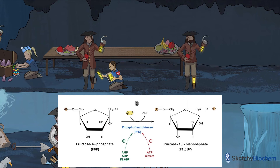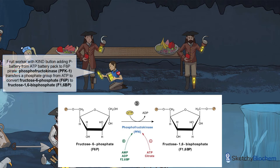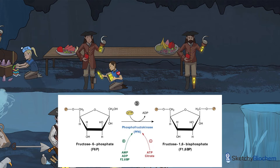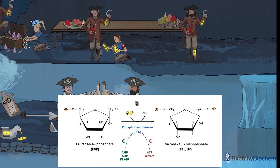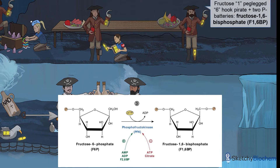In step 3, phosphofructokinase 1, or PFK1, transfers a phosphate group from ATP onto F6P to make fructose-1,6-bisphosphate, aka F1,6-BP. PFK1 is represented by another kind button-wearing cast member adding a phosphate battery to the one peg leg of the six-hook-handed pirate. The peg legs represent carbon number 1. He's surrounded by fruit to remind you of phosphofructokinase 1. This step is also irreversible, as shown by the waterfall. The six-hook pirate now has two phosphate batteries — one in his six-hook arm and one in his one peg leg — hence F1,6-BP. So far, we've used two ATP.